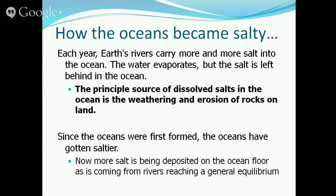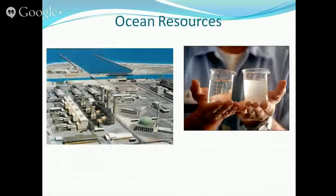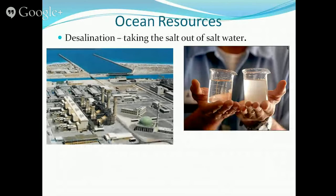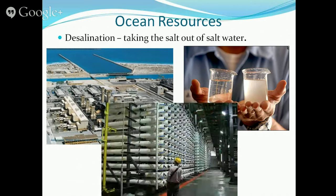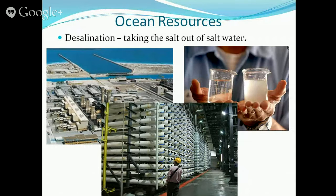Even though rivers keep adding salt to the oceans, for the next million, 2 million, 10 million years, they're not going to get any saltier — they'll stay at roughly the same percentage. As for ocean resources, people near the ocean use it for food, but we also use it for water through desalination, where we remove the salt by passing it through tiny filters. Tap water near the beach tastes a little salty, but the process has removed most of the impurities.